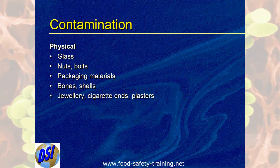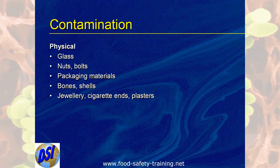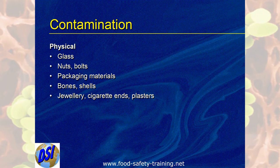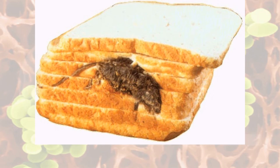Let's look at physical contamination and how it can get into food. Glass could come from broken light bulbs — this is why there is a no-glass policy in kitchens. Nuts and bolts could come from poorly maintained machinery. Packaging materials such as plastic, cardboard, string, and staples are also sources. Bones and shells are an inherent contamination from things like chicken and shellfish. Jewellery, cigarettes, and plasters are the sort of things that would come from members of staff — I recall one instance where a plaster was found in the middle of a pork pie with the finger still inside it.